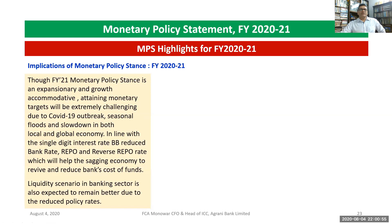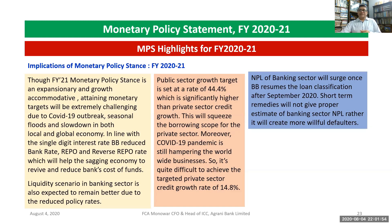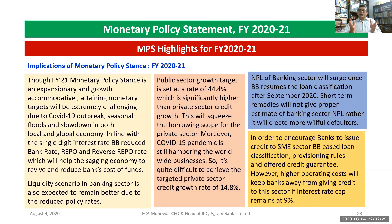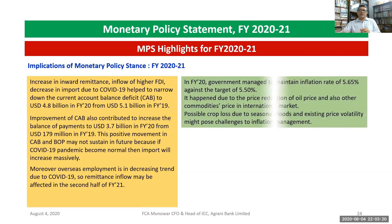Regarding the implications of the monetary policy stance in 2021: the stance is accommodative. Attaining monetary targets will be extremely challenging due to COVID-19 and seasonal floods. The banking sector liquidity scenario is expected to remain better due to the reduction of policy rates. The public sector credit growth target of 44.4% is significantly higher than the private sector growth target. Bangladesh Bank is also offering credit guarantee schemes, and all state-owned banks are working with this. An increase in remittance inflows and higher FDI are needed for sustained growth.